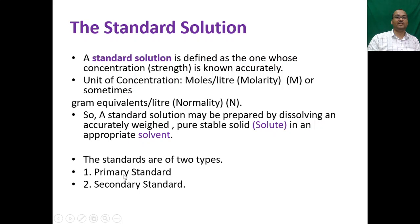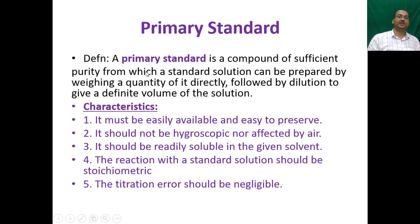Standards are of two types: primary standard and secondary standard. What is the definition of primary standard? A primary standard is a compound of sufficient purity from which a standard solution can be prepared by weighing a quantity of it directly, followed by dilution to give a definite volume of the solution. What are the characteristics of a primary standard? It must be easily available and easy to preserve. It should not be hygroscopic nor affected by air. It should be readily soluble in the given solvent. The reaction with a standard solution should be stoichiometric. The titration error should be negligible.